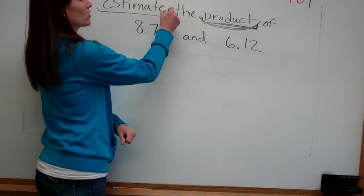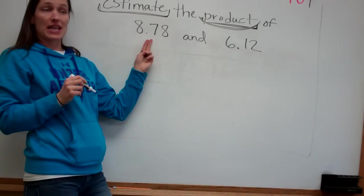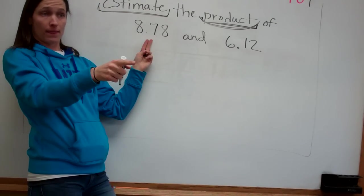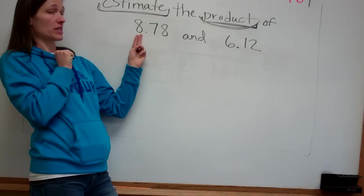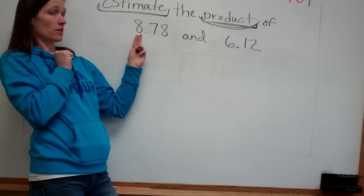So estimate. Let's go in and do that first. What would 8.78 change to? We'll know the answer. 8.7. Well, in between which two numbers is 8.78? 8.7. No. 8.9.